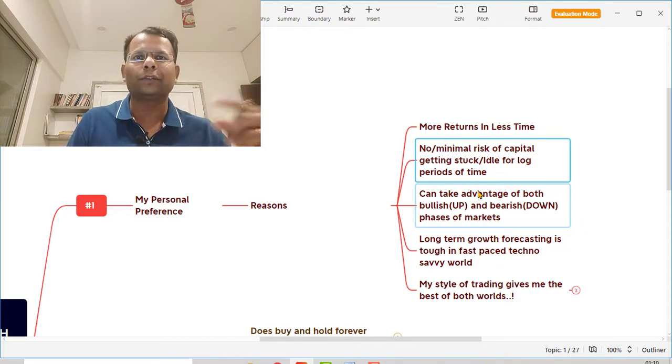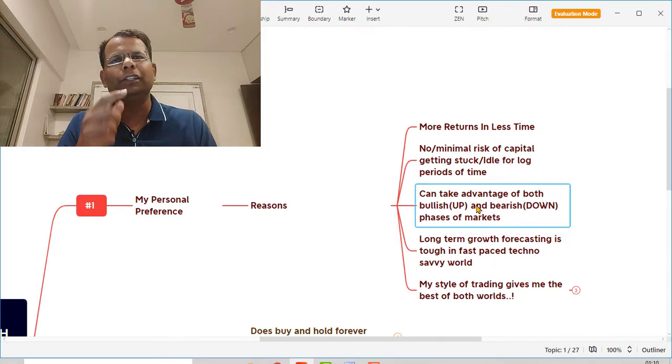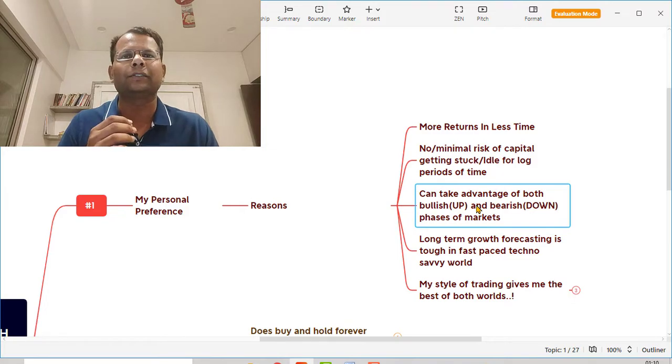We are avoiding those phases in trading, but in investing we have to go through or weather out all these phases. I can take advantage of both the bullish phase and the bearish phase, or the up phase and the down phases of the markets when I am a trader, but an investor can only take advantage of one side of the market.